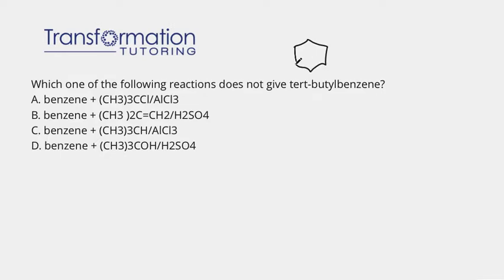Tert-butylbenzene looks like a benzene ring that must be connected to a tert-butyl group which looks like this. So that's what we're looking for as the product, and if it is not our product, that will be the answer to this question.